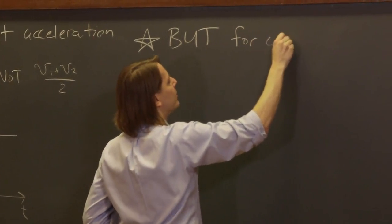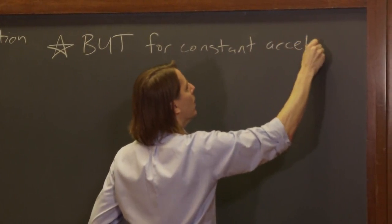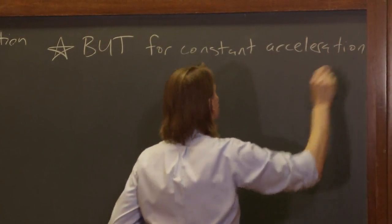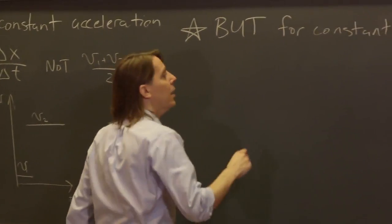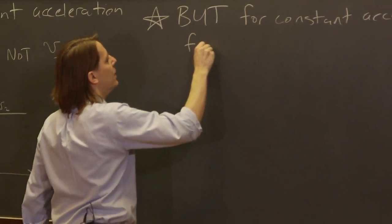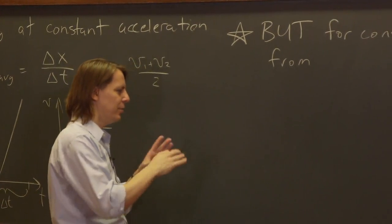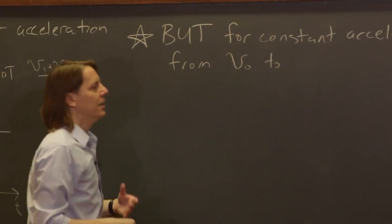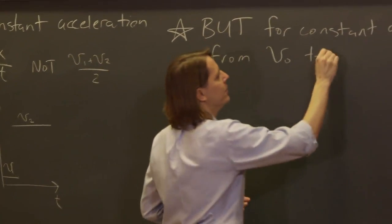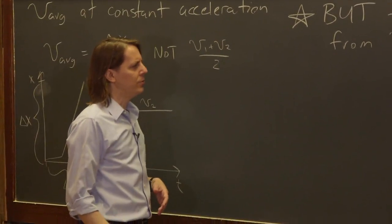But for constant acceleration, for constant acceleration from, let's say, this time I'll give them different subscripts. It's usually a problem with acceleration and you're looking at the velocity. You think in terms of V0, and then you get up to V, or I'll say V final in this case. That's more the terms we use there.